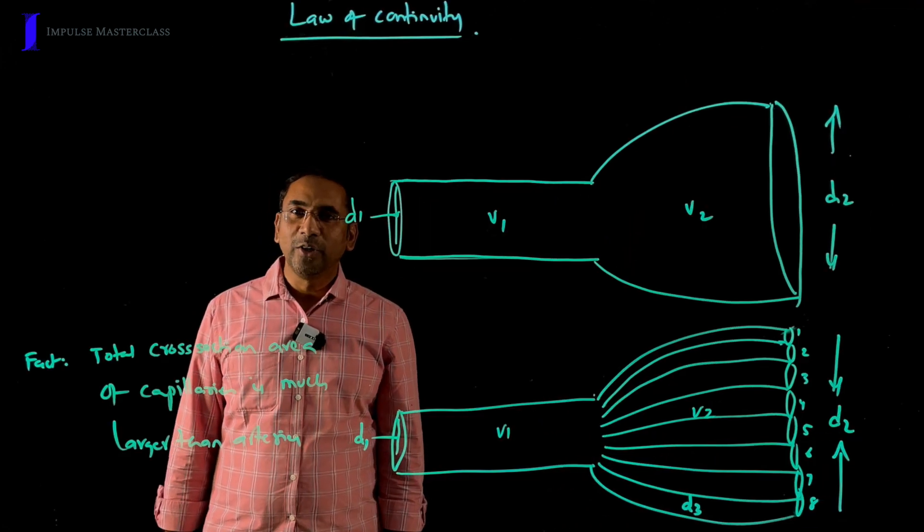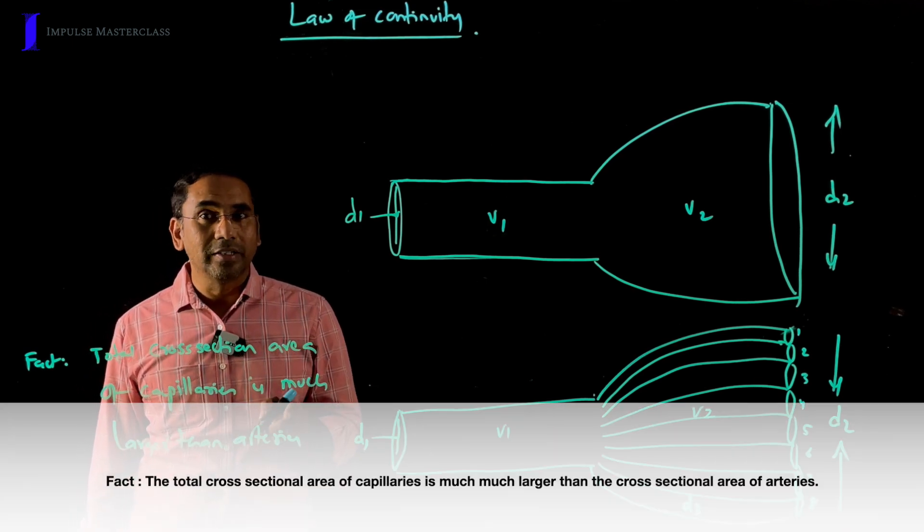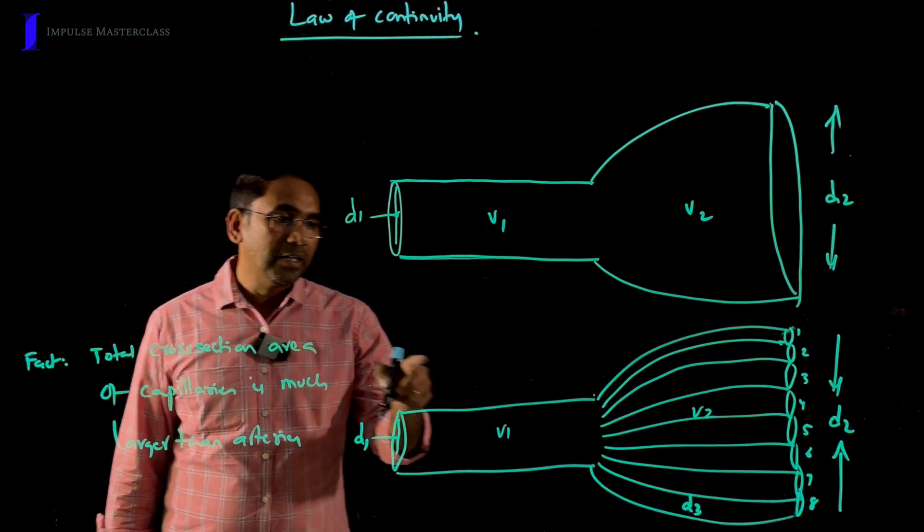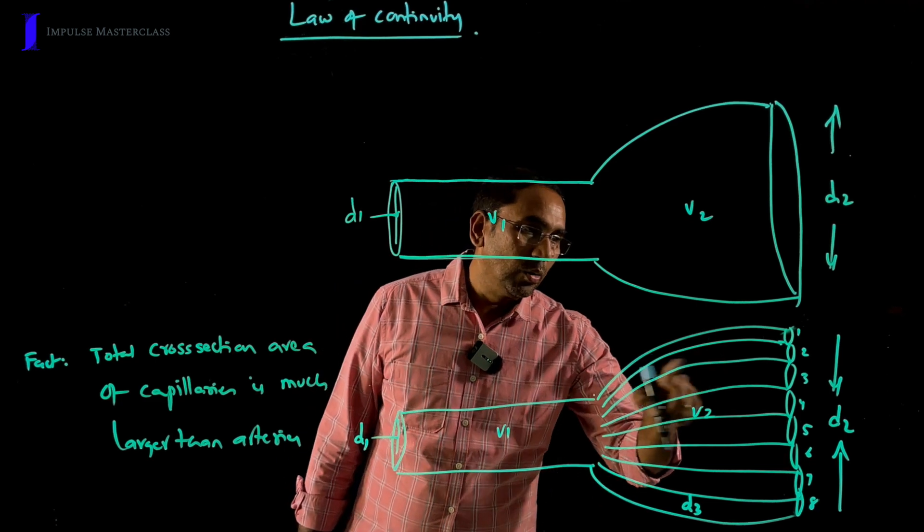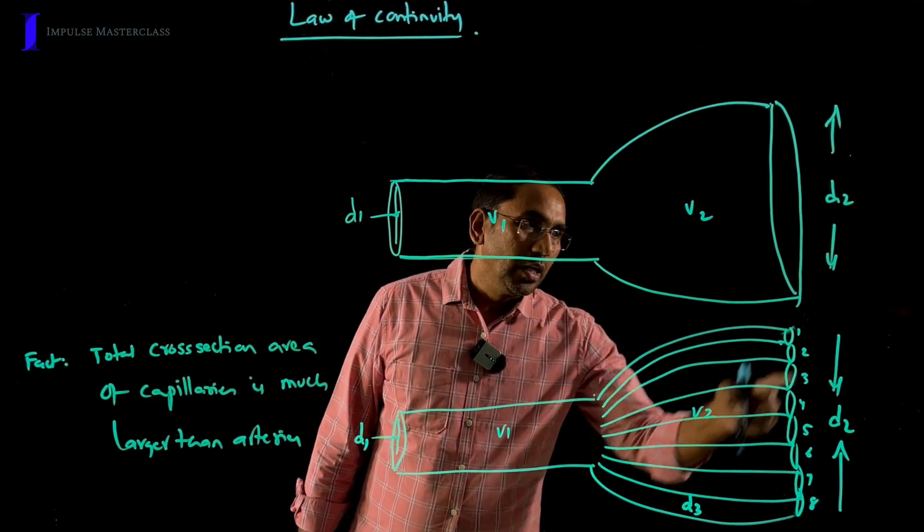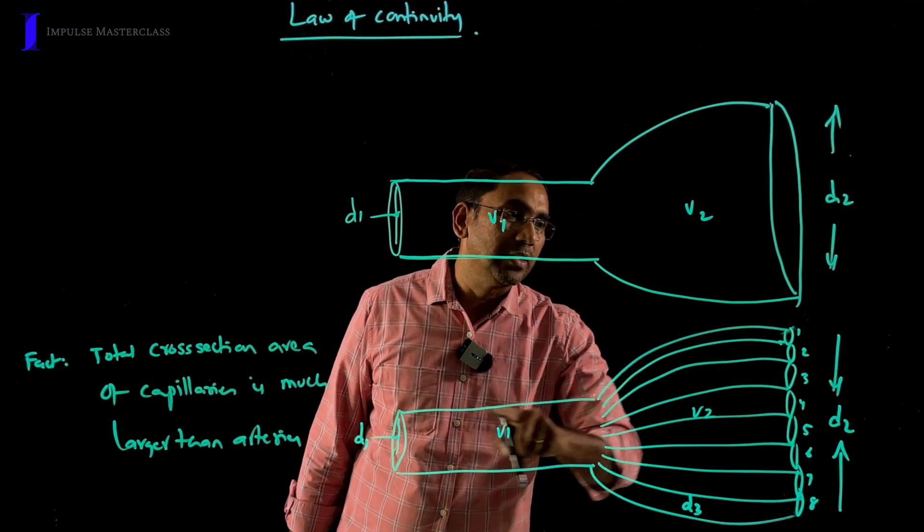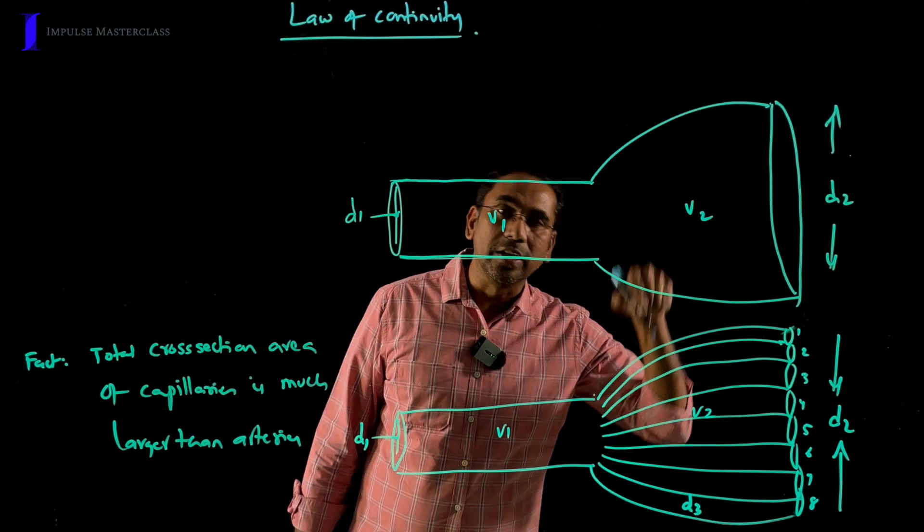Now I am going to tell you the fact that the total cross-sectional area of capillaries is much greater than the cross-sectional area of arteries. Just imagine this is an artery and all these are capillaries. Now the total cross-sectional area of capillaries is much greater than arteries. Hence, the flow of blood is very slow as we already discussed.